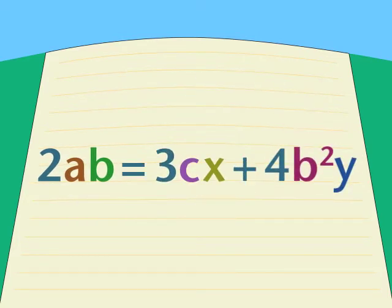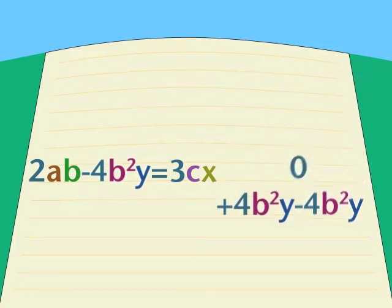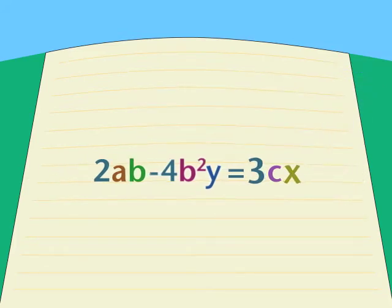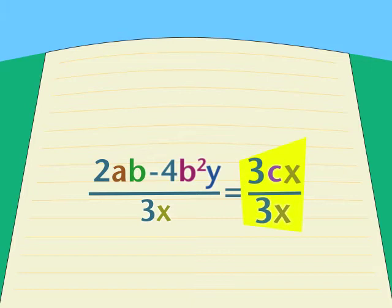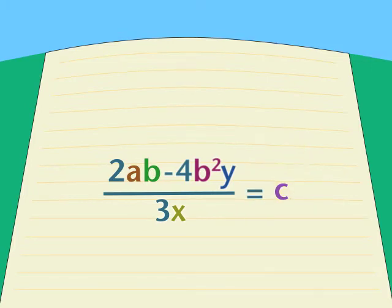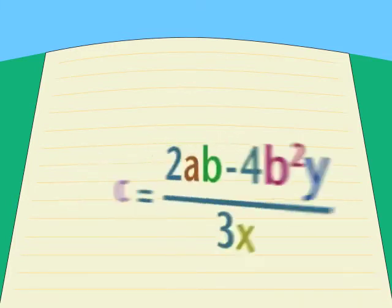Step 1. To move the 4b squared y, we subtract 4b squared y from both sides, leaving a negative 4b squared y on the left. Step 2. To remove 3x to the other side, leaving the C all alone, we divided both sides by 3x. It cancels out on the right to leave just C, which is exactly what we were after. And we can't simplify the expression on the left any more than it is, so we leave it. So that's our answer, the formula for C.